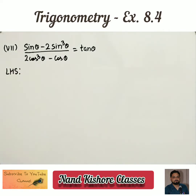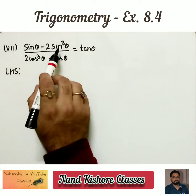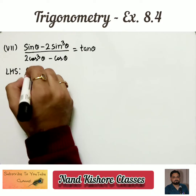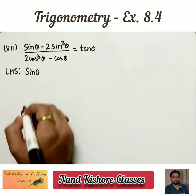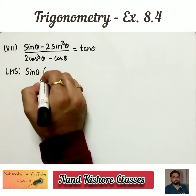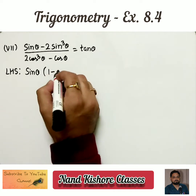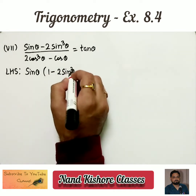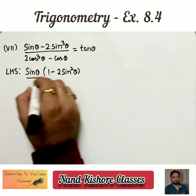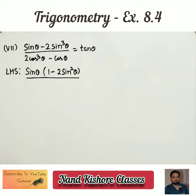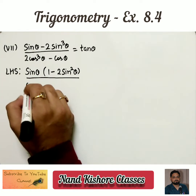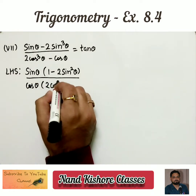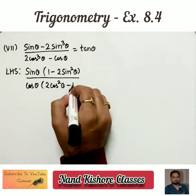I am taking the left hand side. We have sin θ and sin cube θ, so sin θ can be taken out as a common factor, giving us 1 minus 2 sin square θ. In the denominator, cos θ can be taken out as a common factor, giving us 2 cos square θ minus 1.